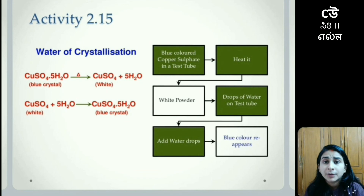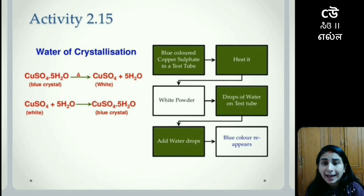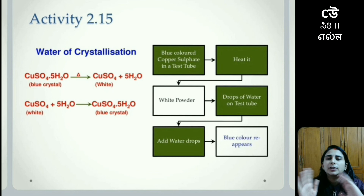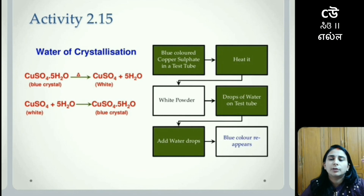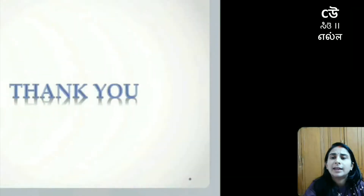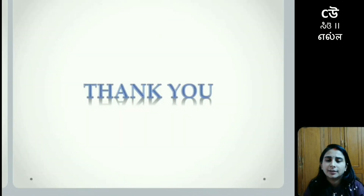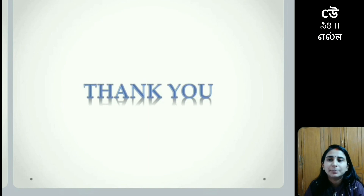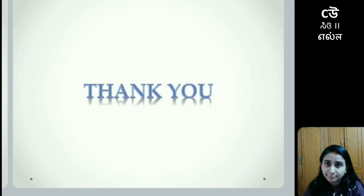When blue colored copper sulfate in a test tube is heated it turns into white powder, but when some drops of water are added to it, it turns bluish again. This is a reversible reaction — initially bluish in color, turned white on heating, then returned to blue when water was added. This was it for chapter 2; all the videos were intended to be helpful.